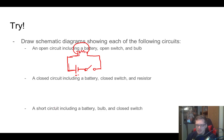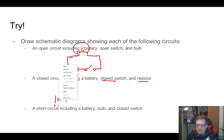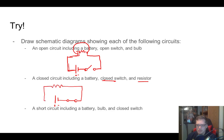Next: a closed circuit including a battery, a closed switch, and a resistor. It's essentially the same layout but now the switch is closed — the arm is touching the contact — and instead of a bulb we draw a zigzag resistor symbol. There's your closed circuit diagram.